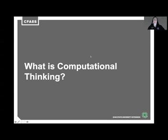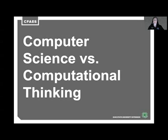What is computational thinking? Computational thinking is not a new process; however, it is a process of problem solving. Computer scientists use their skills and different approaches to solve complex problems. Computer science describes an entire discipline of creating computer programs and systems, while computational thinking is a process that allows people to solve complex problems systematically.